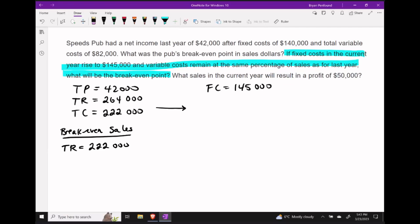So first, let's write down that we know the fixed costs in this current year are going to rise up to $145,000.